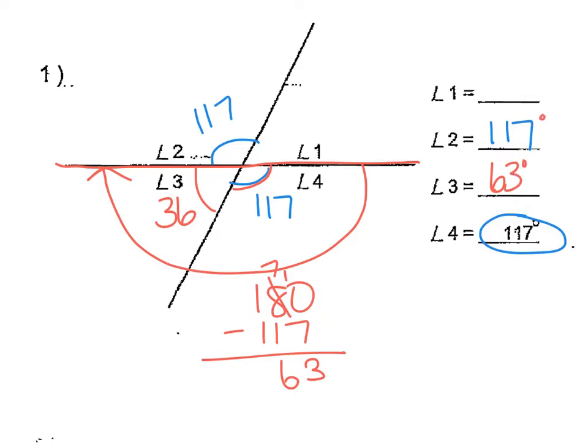Angle 3 and angle 1 are vertical angles because they're opposite of each other. So if angle 3 is 63 degrees, then angle 1 also must be 63 degrees.